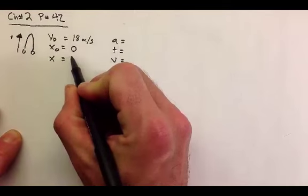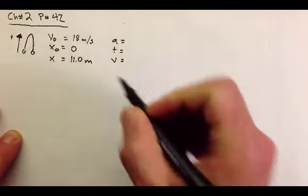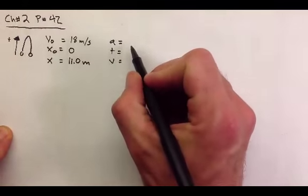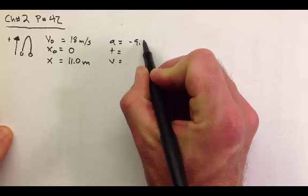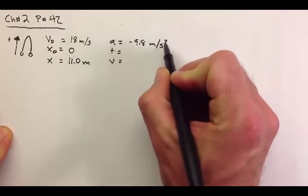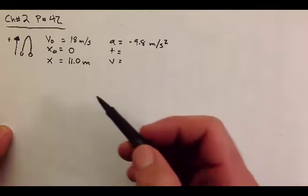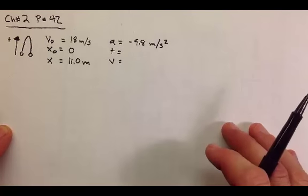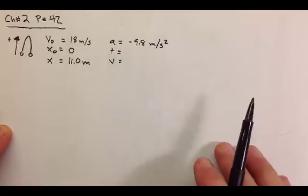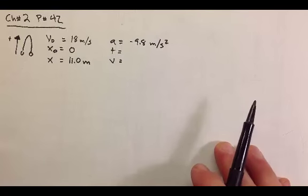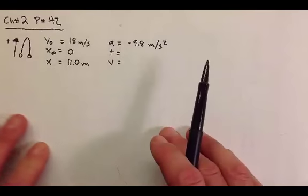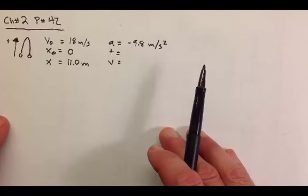We are told that the stone rises up to a height of 11 meters. We would also assume that the rock is on the earth, and therefore its acceleration is a negative 9.8 meters per second squared. Even though the rock is initially moving upwards, it's accelerating downwards since gravity is pulling down. So we don't know a whole lot about the time from what the problem tells us, nor the final velocity when it's at 11 meters there.